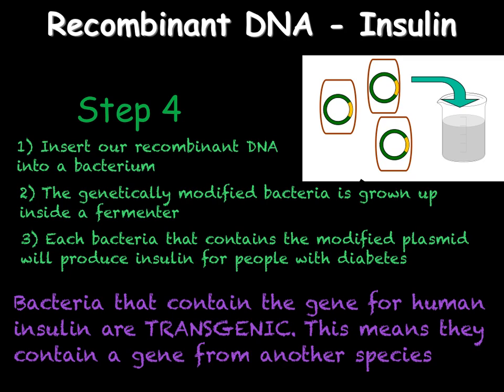An advantage of producing insulin this way for diabetics, rather than producing it from pigs, is that there is a much lower chance of rejection by the body as it is human insulin. This concludes the penultimate video in the Edexcel B3 revision tutorial series. In the final video B3.12 we will look over genetically modified organisms, food security and biofuels.